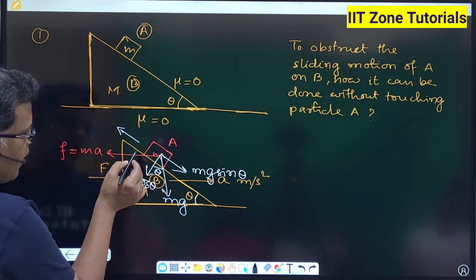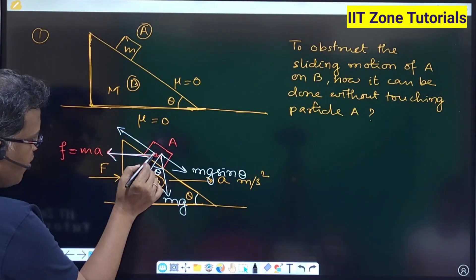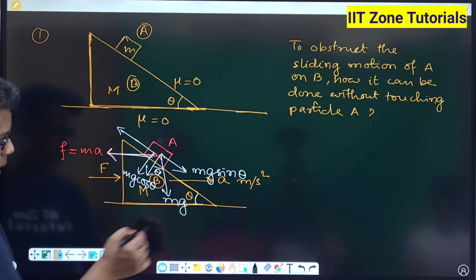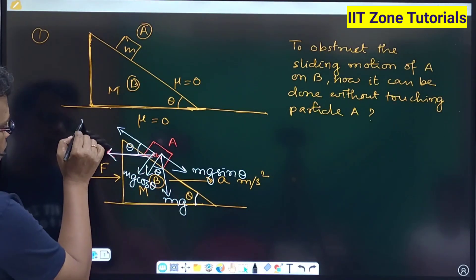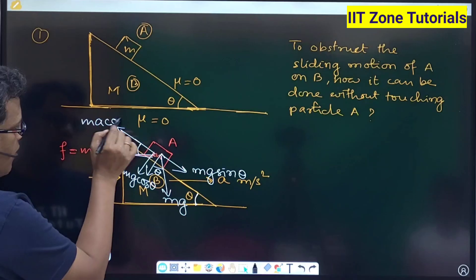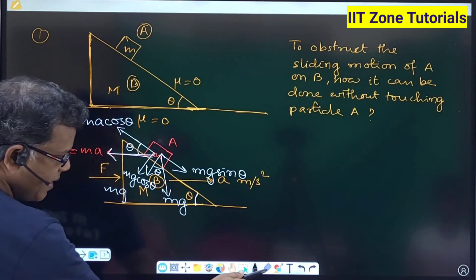So to do so if you resolve M A into two components, this M A can be resolved, pseudo force can be resolved in two components, and as per geometry if this is theta this can also be theta, right. So this component will be M A cos theta and this side it will be M A sin theta, right.